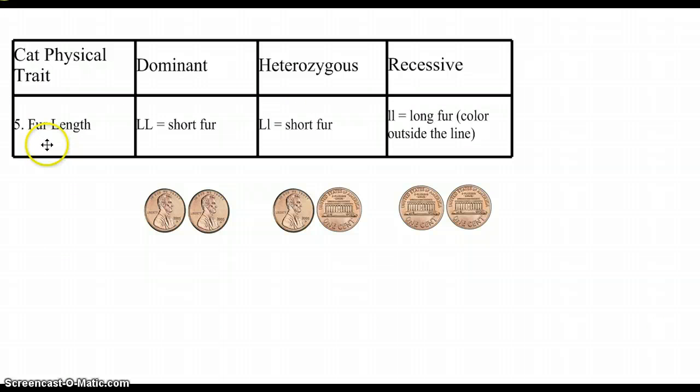The fifth trait is on fur. How long is the fur? Two heads is short fur, so you color within the lines. Short fur would also be heterozygous. And if it's long fur, then just kind of scribble outside the line. That would be two tails.